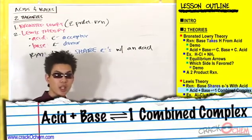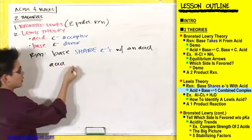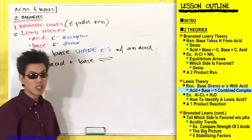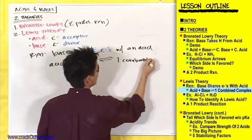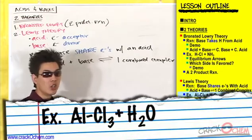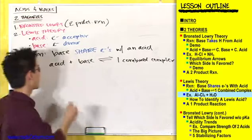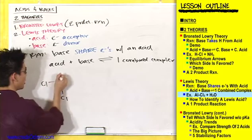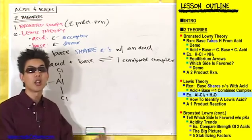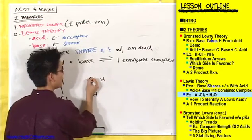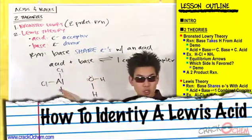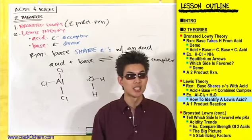Let's do the general reaction. You take an acid, combine it with a base, and what pops out is one combined complex. An example of a Lewis acid is AlCl3 — a compound that has room for electrons to come in. A base would be anything with a lone pair, like water (H2O), which has two lone pairs. Aluminum in AlCl3 only has six electrons around it — two, four, six — so it has room for two more electrons to come in. It can accept electrons, meaning it is a Lewis acid.